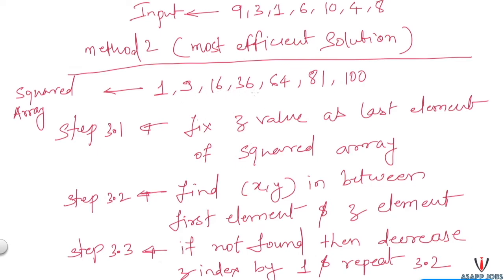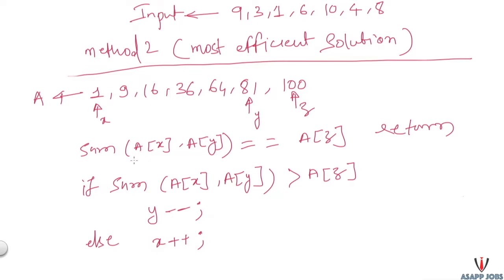After executing steps one and two, the array becomes [1, 9, 16, 36, 64, 81, 100], which we call the squared array. In step three, we fix z as the last element of the squared array and search for a pair x and y between the first element and z. If we find such a pair, we return true; otherwise, we decrease z by one index and repeat the search.